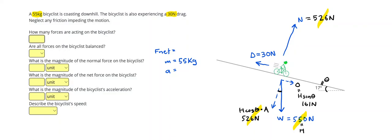I can actually go ahead and fill out a few of my first answers. There are three forces acting on the bicyclist. The forces are not balanced. Remember, if you see that the speed is constant or the object is at rest, then the forces will be balanced, but this one's not. Then the magnitude of the normal force is going to be 526 N.